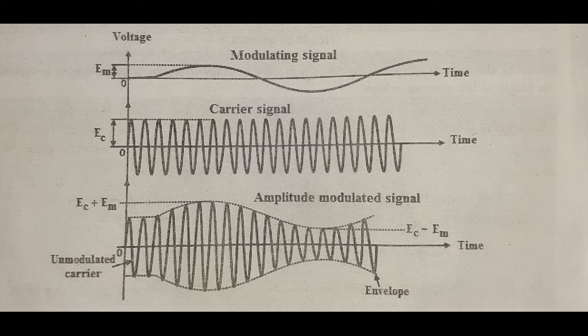The amplitude of the carrier signal is changed in accordance with the instantaneous amplitude of the modulating signal. The carrier signal is called the AM frequency signal, and the other signal is called the modulating signal. The AM modulated signals are created by the AM modulator. The amplitude is created by the AM modulator.